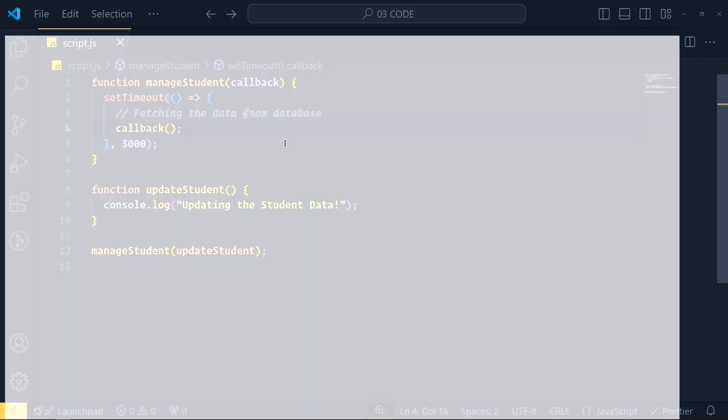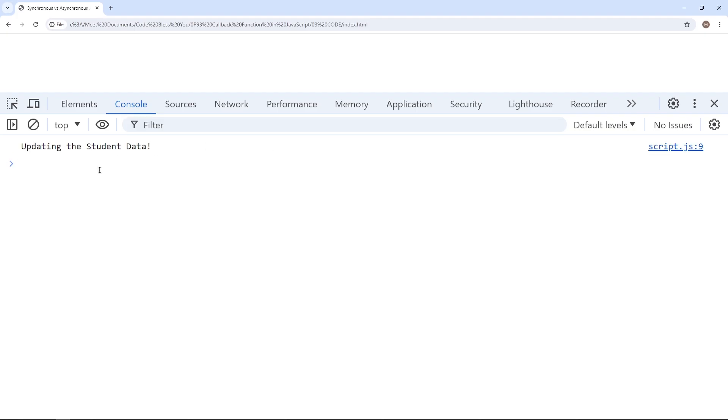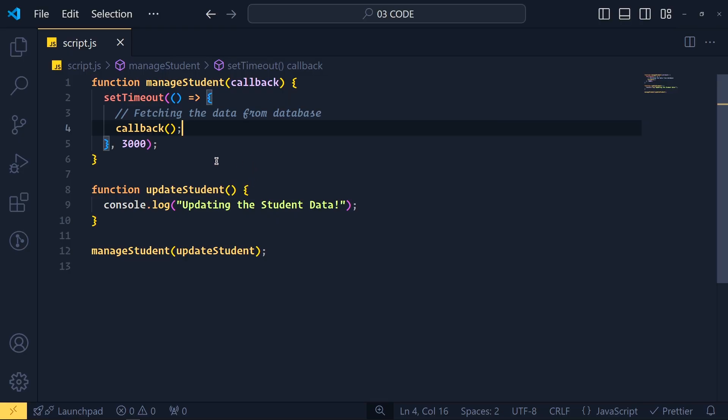Let's check the output. See, after 3 seconds, we get our console message. Now here, we can also define this callback function in arrow function syntax. So at the place of the function keyword, we write const updateStudent equals to and we separate parentheses from curly brackets using this arrow. You know this right?